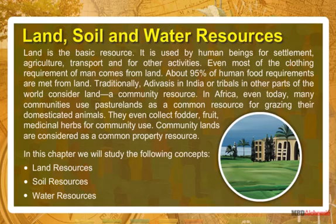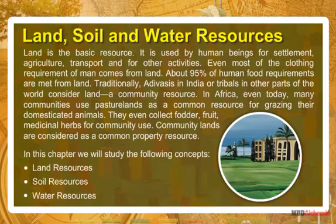Traditionally, Adivasis in India or tribals in other parts of the world consider land a community resource. In Africa, even today, many communities use pasture lands as a common resource for grazing their domesticated animals. They even collect fodder, fruit, and medicinal herbs for community use. Community lands are considered as a common property resource.